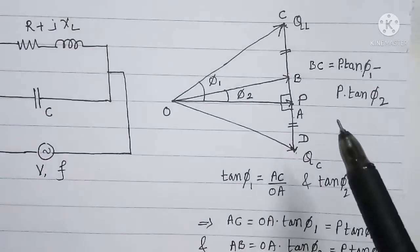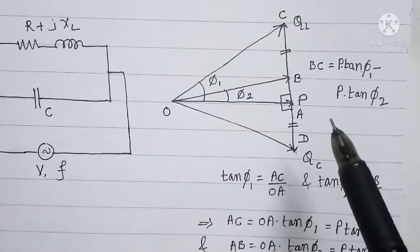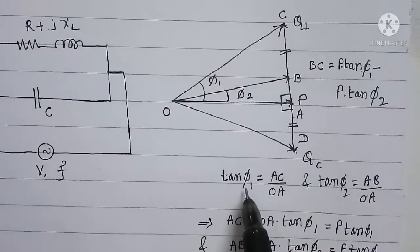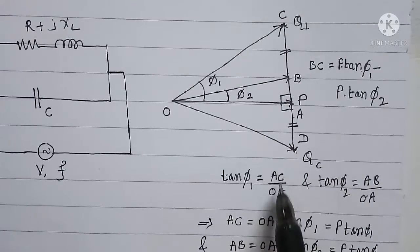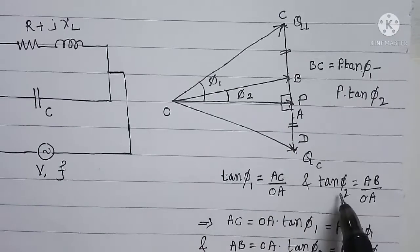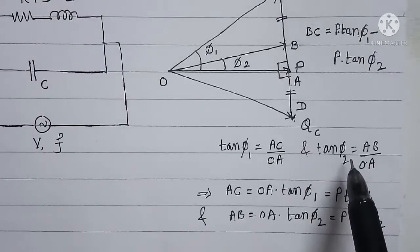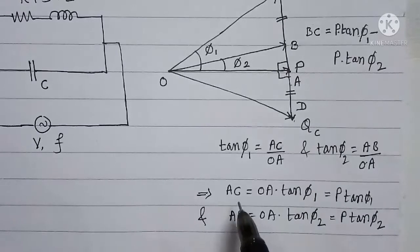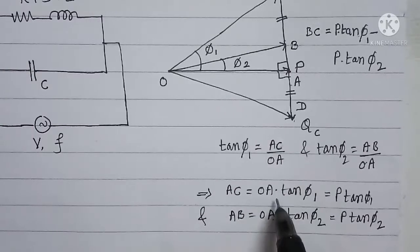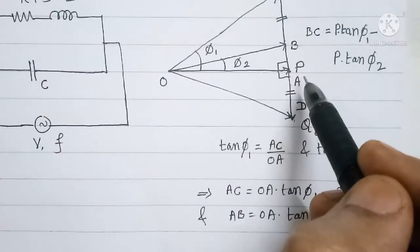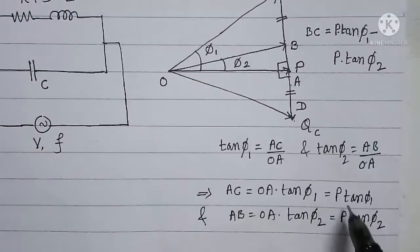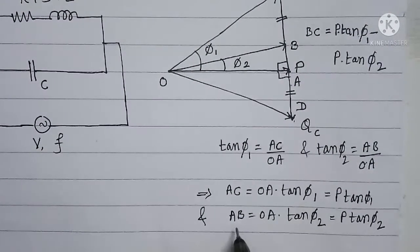Now using trigonometry, we can write tan φ1 = AC / OA, that is opposite side upon adjacent side, and tan φ2 = AB / OA. From these two trigonometric ratios, we can write AC = OA × tan φ1. But OA is equal to P, the real power. So AC = P × tan φ1. Similarly, AB = P × tan φ2.